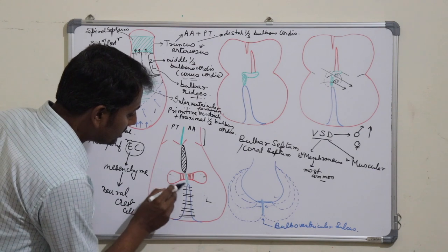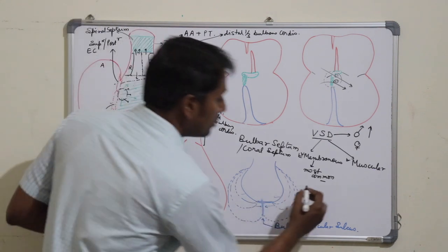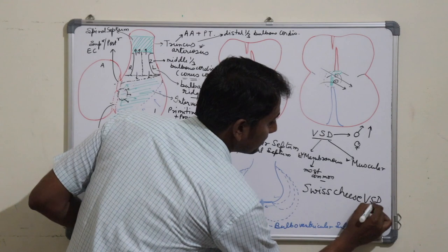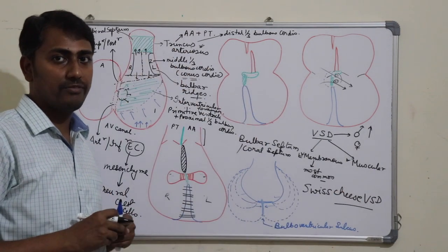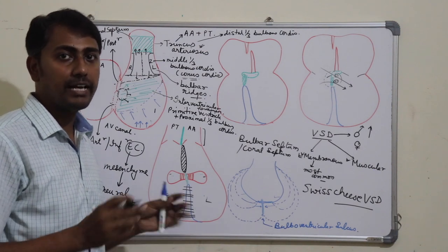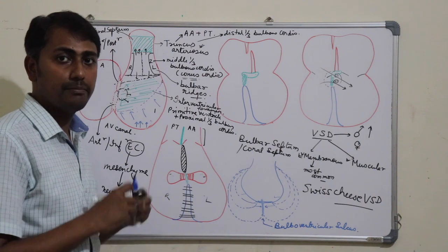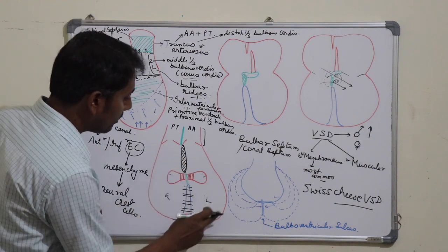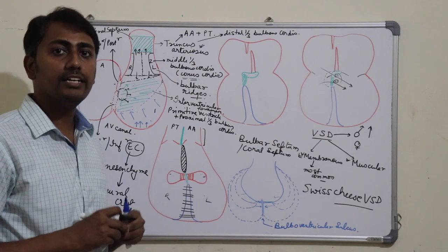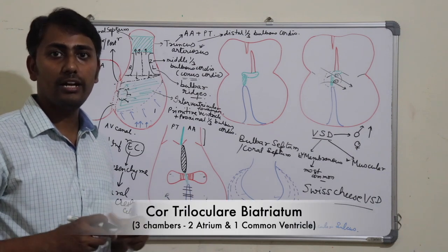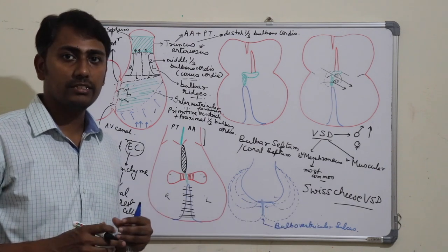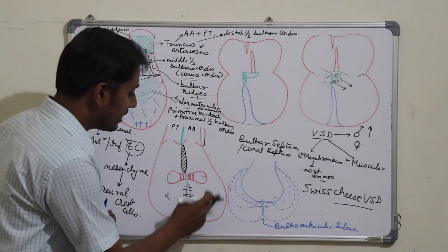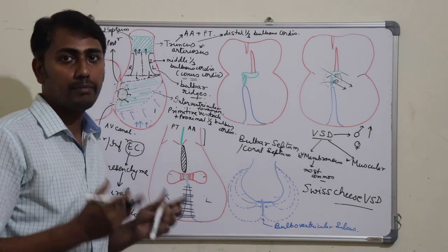Therefore, this type of ventricular septal defect is known as Swiss cheese ventricular septal defect. There could be another type in which there is complete absence of the interventricular septum — both the membranous and muscular parts have not formed. This leads to a common ventricular cavity, resulting in a three-chambered heart known as cor triloculare biatriatum, where two atria drain into a common ventricle opening into both the aorta and the pulmonary trunk.